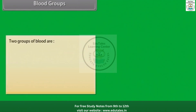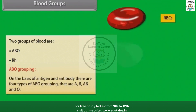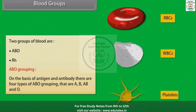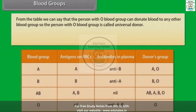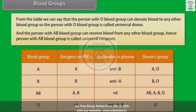There are two groups of blood: ABO and RH. On the basis of antigen and antibody, there are four types of ABO grouping: A, B, AB, and O. The person with O blood group can donate blood to any other blood group, so they are called the universal donor. The person with AB blood group can receive blood from any other blood group, so they are called the universal recipient.